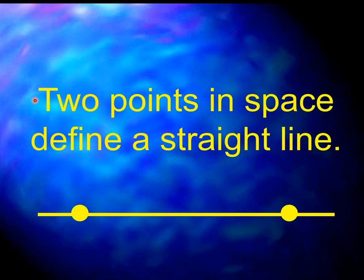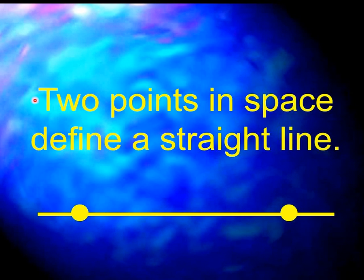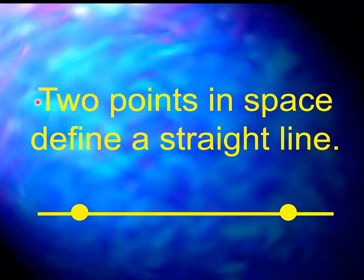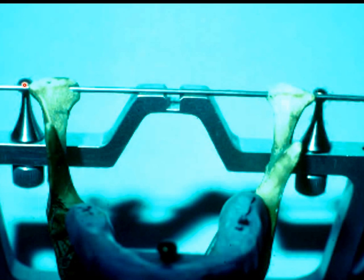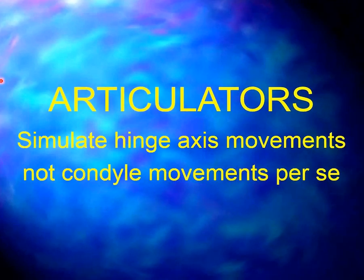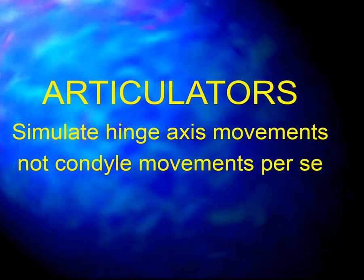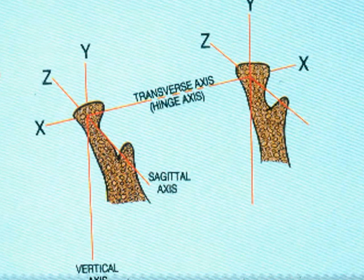Articulators simulate hinge axis movements, not condyle movements per se. People also talk about sagittal and vertical axes that go through the condyle, but they're very difficult to locate. The hinge axis is the only axis that's constant with both condyles. To record condylar movements, we need only to track two points of fixed distance apart on the hinge axis, since any movement of the mandible around a vertical or sagittal axis will always move the hinge axis. There is a concept of intercondylar distance that affects the approach of opposing teeth.